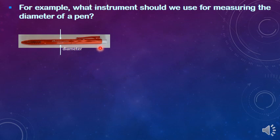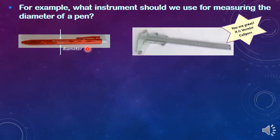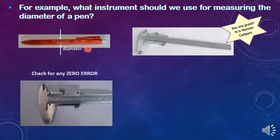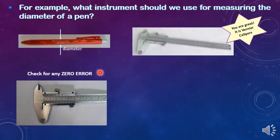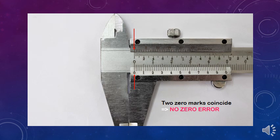Another example: what instrument should we use for measuring the diameter of a pen? It is the vernier calipers. Before we use the vernier calipers to measure the diameter of the pen, please check for any zero error. Make sure the jaws of the vernier calipers are fully closed. Since the zero marks on the main scale and the vernier scale coincide with each other, therefore for these vernier calipers, there is no zero error.